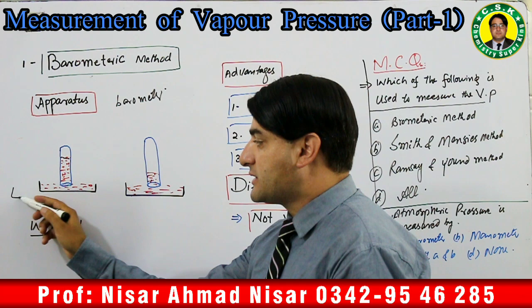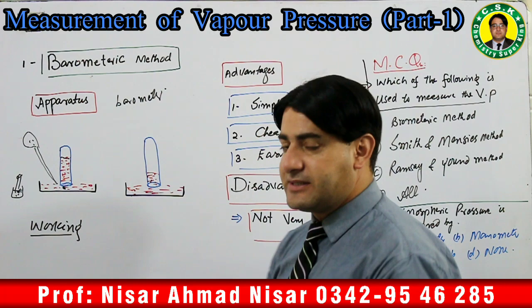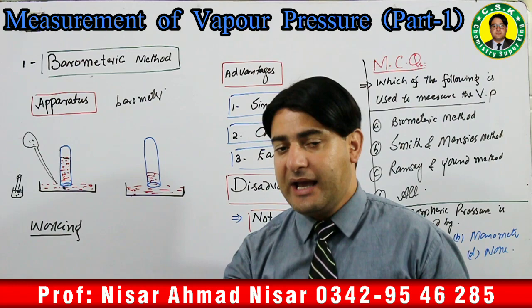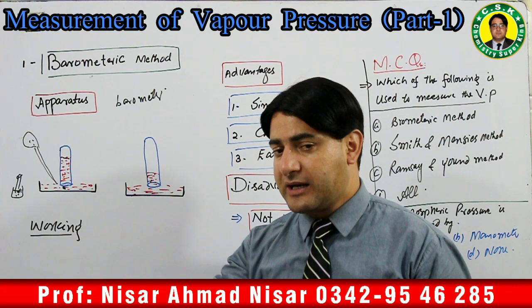Ab barometer ki working: woh liquid jis ka vapor pressure maloom karna ho, us ka ek drop dropper ki madad se us tube ki neechay daal dete hain. That is, the liquid whose vapor pressure is to be measured is placed with the help of a dropper in the form of a drop beneath the test tube.